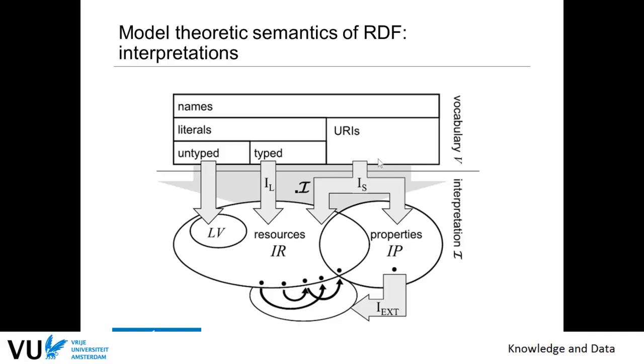So basically for each element of the subject position which could be URIs or blank nodes, we have only one choice of interpreting these URIs, and then they could be either properties so we tell something about a property or they could be resources.